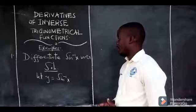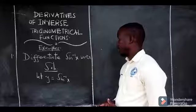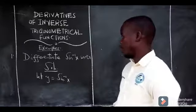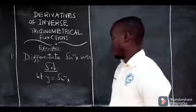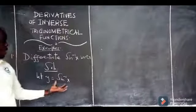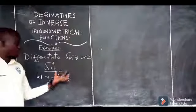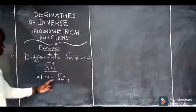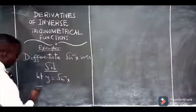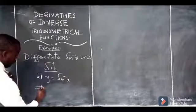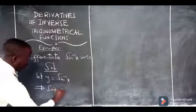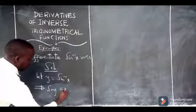They want us to differentiate sine inverse of x with respect to x. So what basically do we do here? Of course, we have to begin by letting y equal to sine inverse of x, the function we are given. And if this is true, then it implies that sine of y is equal to x.